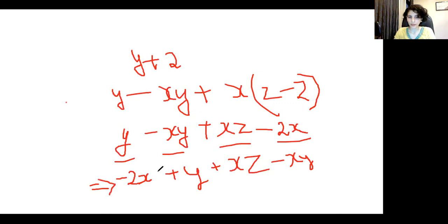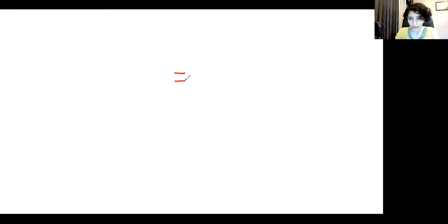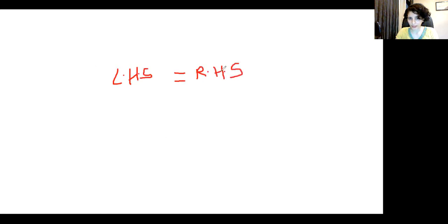You can do any rearrangement within an algebraic expression as long as you move the term along with its sign. In an algebraic equation there is an equal to sign, with an algebraic expression on both sides. The equality sign connects the two expressions, saying this expression is equal to that expression. This is called an algebraic equation.